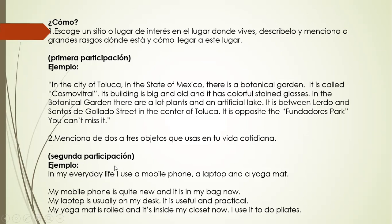In your second entry or second participation, you have to mention from two to three objects that you use in your everyday life. For example: in my everyday life, I use a mobile phone, a laptop, and a yoga mat. My mobile phone is quite new and it is in my bag now. My laptop is usually on my desk — it is useful and practical. My yoga mat is rolled and it is inside my closet now. I use it to do pilates. So you have to choose two to three objects, use adjectives to describe them, and tell me the function of every object or what you use it for.